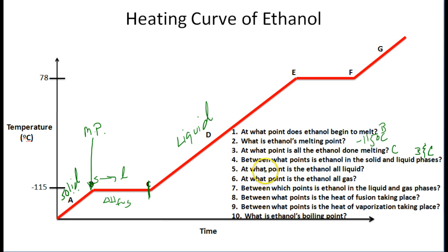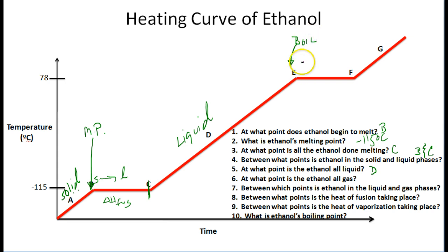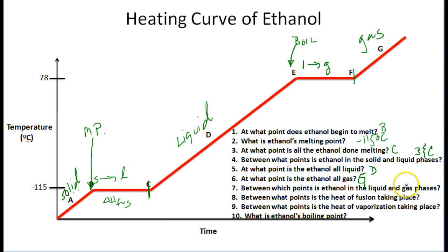Question five: at what point is the ethanol all liquid? Right here in this whole section is point D — we have all liquid ethanol. Question six: at what point is the ethanol all gas? As we continue to heat the liquid ethanol, it begins to boil, converting liquid ethanol into gaseous ethanol. All the liquid ethanol is done turning into gas at point F, so from point F onward in point G we have all gaseous ethanol. Question seven: between which points is ethanol in the liquid and gas phases? That is between E and F.